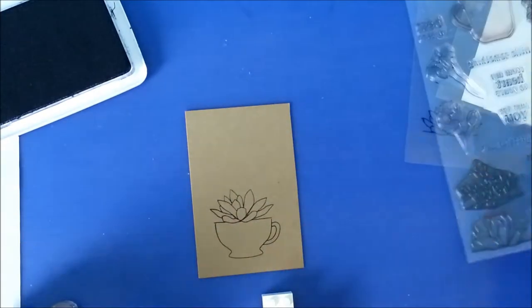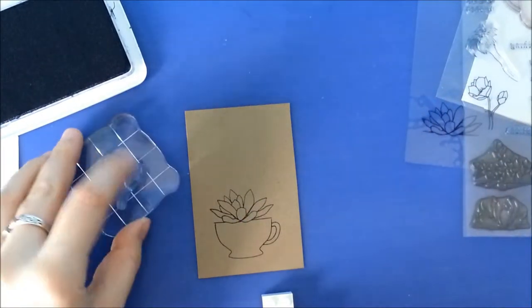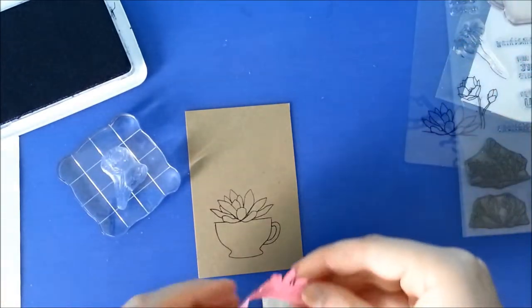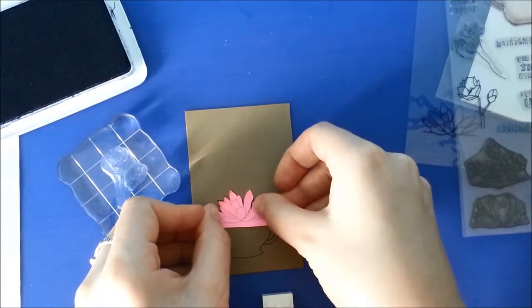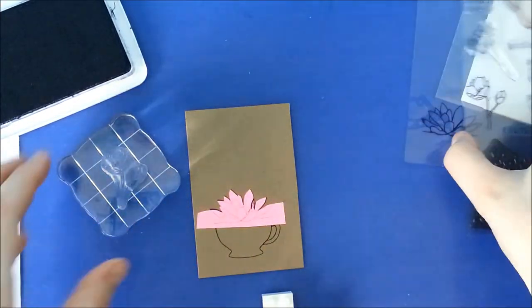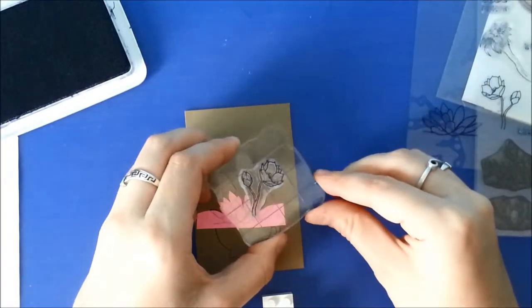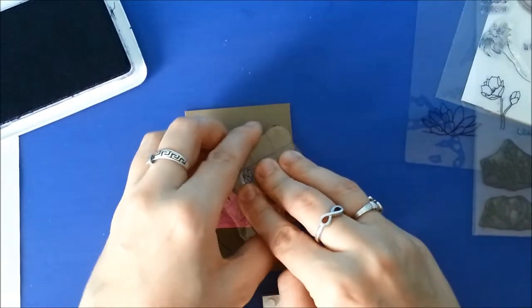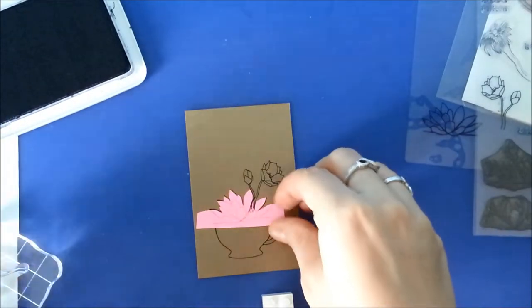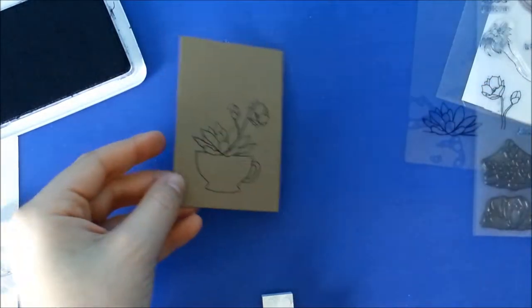We want to stamp one of our flower images from this set. I already have a mask cut. Put that on there. We can ink up our flowers and just line this up. And we have a nice, perfectly masked image.